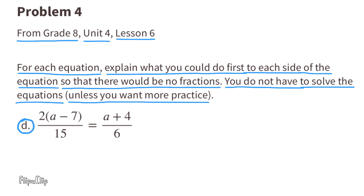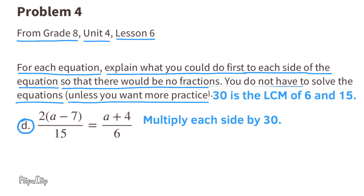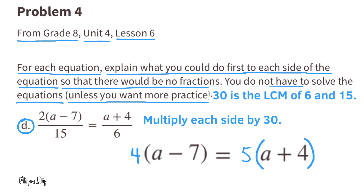Equation D: 30 is the least common multiple of 6 and 15. Multiply each side by 30 to get rid of the fractions. The equation would read 4 times (A minus 7) equals 5 times (A plus 4). Help me disrupt YouTube's algorithm by liking this video, commenting, sharing, and subscribing to my channel. Thanks, I appreciate it.